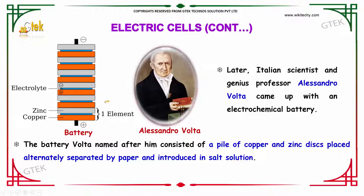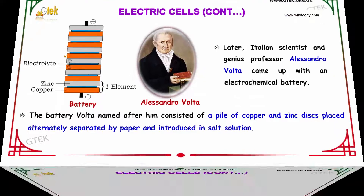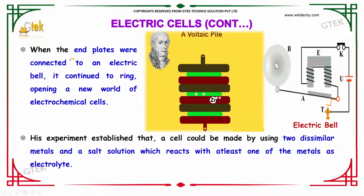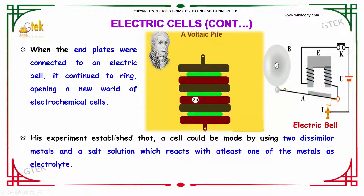The battery Volta named after him consists of a pile of copper and zinc discs placed alternately, separated by paper and introduced in a salt solution. When the end plate was connected to an electric bell, it continued to ring, opening a new world of electrochemical cells.